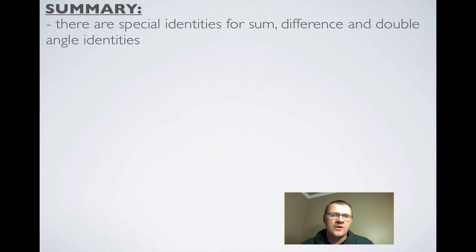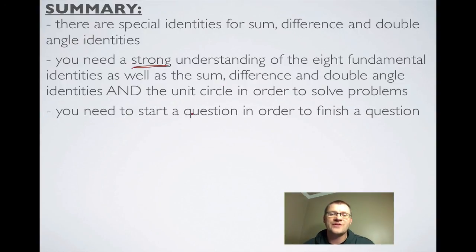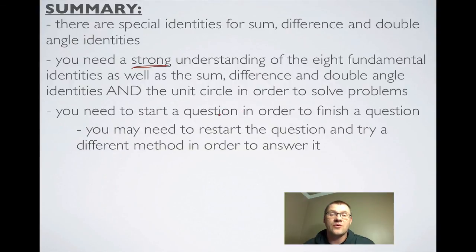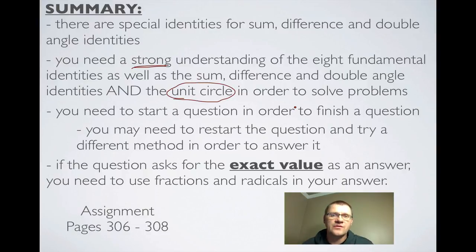In summary: there are special identities for sum, difference, and double-angle. You need a strong understanding — which means practice — of the eight fundamental identities, the sum, difference, and double-angle identities, and the unit circle. Have your unit circle handy whenever you're doing a question. You need to start a question in order to finish it, and you might have to start it more than once — don't get discouraged. If the question asks for an exact value, you need fractions and radicals, which are found on the unit circle. Your assignment is pages 306 to 308. Good luck and we'll see you in class.